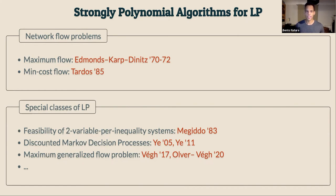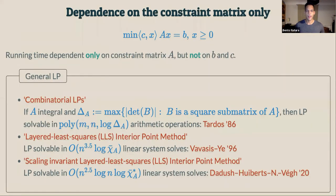What we are concerned about in this paper is an algorithm whose runtime depends on the constraint matrix only — that is, our runtime is allowed to depend on A, but not on the right-hand side b or the objective c. This was done in the 80s by Ifa Tardos for what she calls combinatorial LP. There, if the constraint matrix is integral and you have a bound delta on the sub-determinants of the constraint matrix, her algorithm solves linear programs in time polynomial in m, n, and the logarithm of delta.